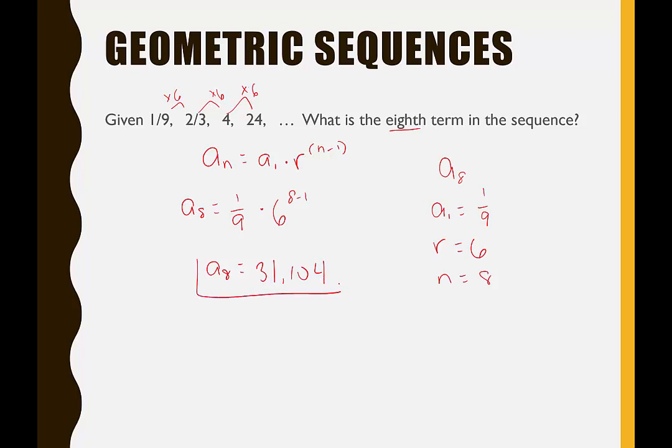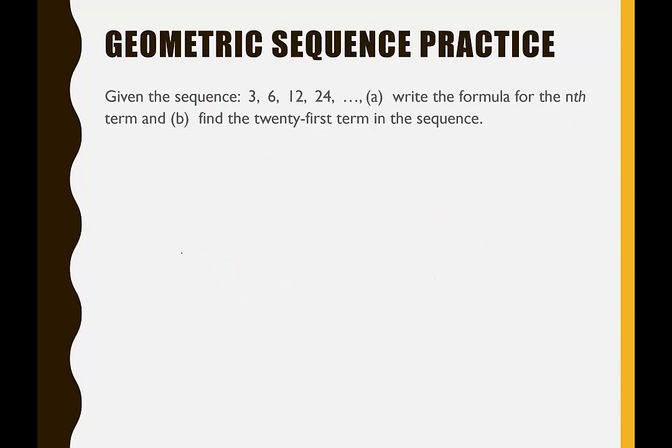So the 8th term is 31,104. You'll notice with geometric sequences the numbers get very large very quickly. If the r value is a fraction, the numbers get very small very quickly — that's just what happens with geometric sequences.